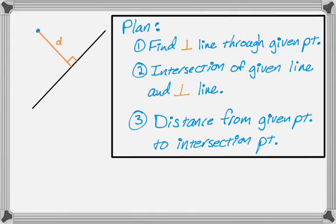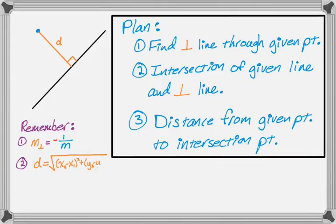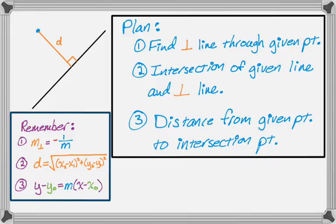To do that, I need to know a couple of things. First, the slopes of perpendicular lines are opposite reciprocals. So the slope of the perpendicular is negative 1 over the given slope. I need to know the distance formula: square root of x2 minus x1 squared plus y2 minus y1 squared. And finally, I'm going to write the equation of the line using point-slope form: y minus y0 equals m times the quantity x minus x0. If I know those things and have this plan in mind, I should be able to solve it.